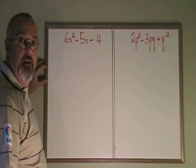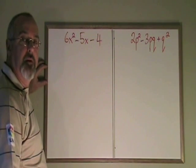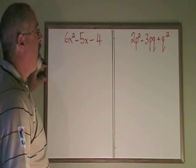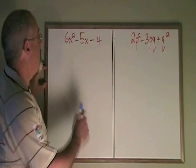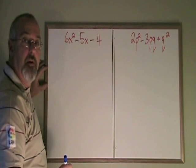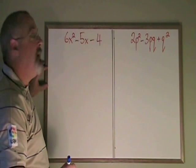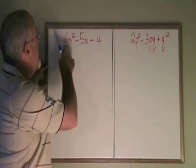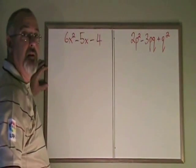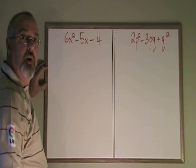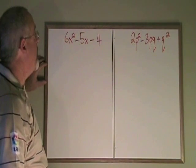The complex trinomial method for factoring is similar to the simple trinomial method, but it can be used in situations where your a, the numerical coefficient of the first term, is not 1. In both of these cases, we have a numerical coefficient of the first term that is not 1. So let's try using the complex trinomial method to factor them.